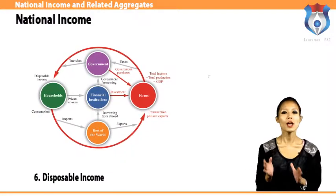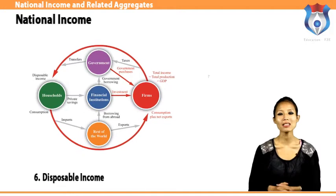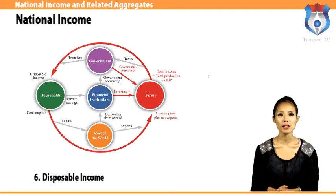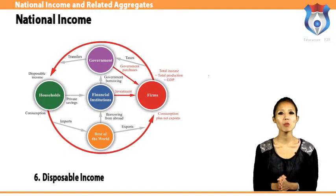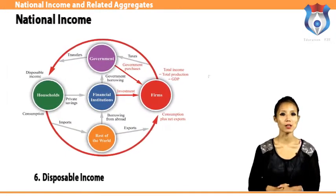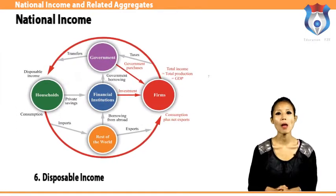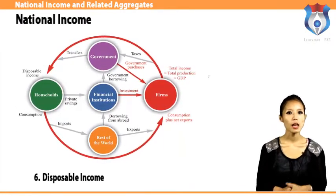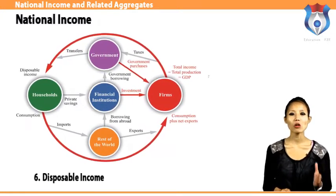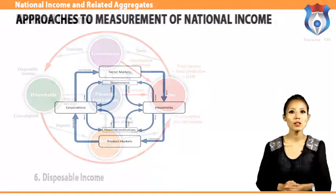Disposable income, also known as disposable earnings, is a measure of a person's ability to manage essential household costs after mandatory taxes have been deducted from gross earnings. It indicates how much money the employee has left to spend or invest. Disposable income equals personal income minus personal taxes. Disposable income can either be consumed or saved, therefore: disposable income equals consumption plus saving.